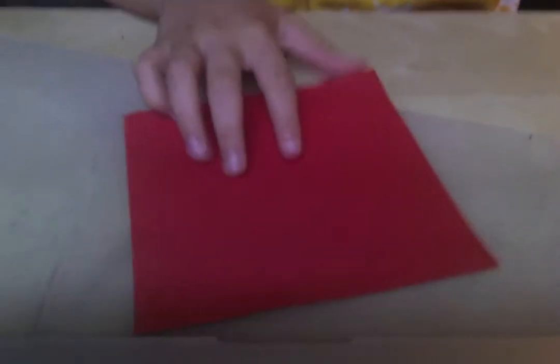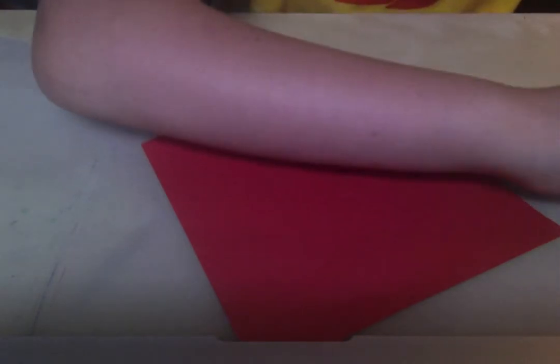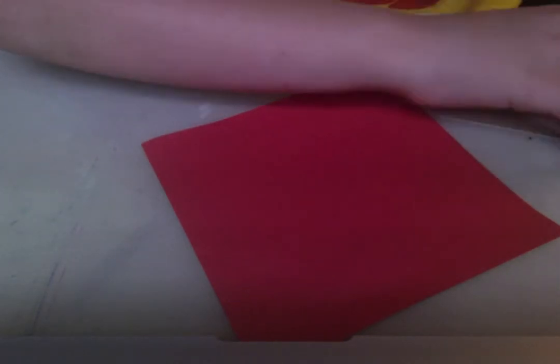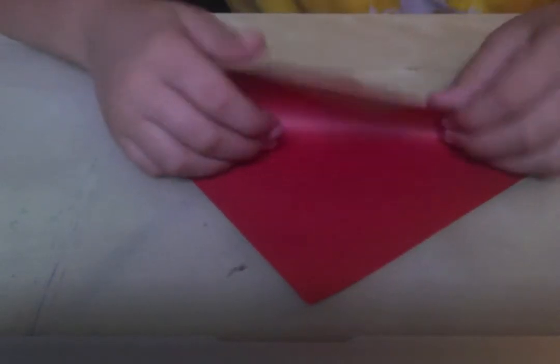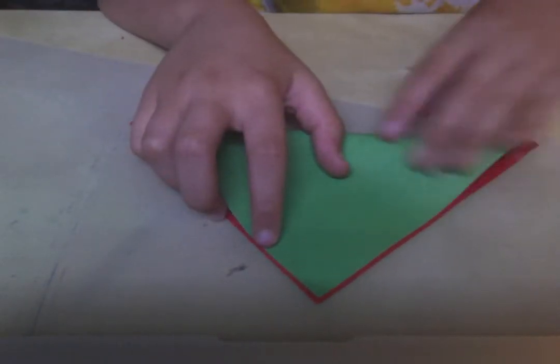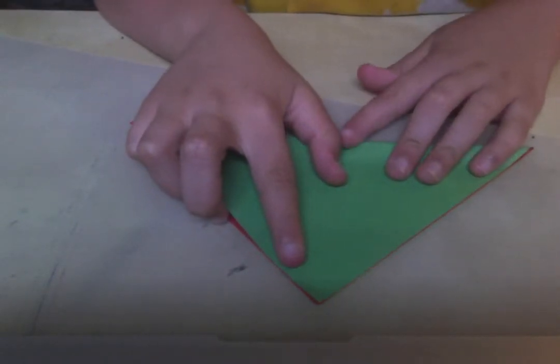For this Chihuahua, I'm going to start out with a six-inch square of kami. It's the side that you want the eyes to be on, up. So I want the eyes to be red. I'm going to fold it in half diagonally.